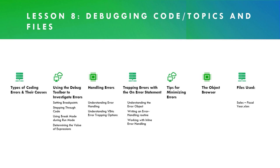This lesson will introduce you to the three types of errors that can occur during execution and the reasons why they occur. The process of tracing and correcting code errors is known as debugging. The Visual Basic Editor has a debug toolbar that can be used for this purpose. We'll also cover some tips for minimizing errors and what you can do if you cannot resolve them.